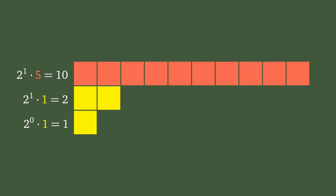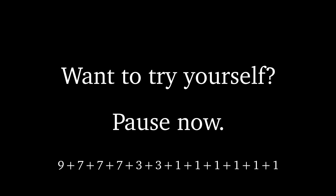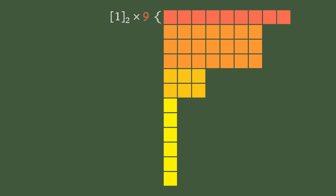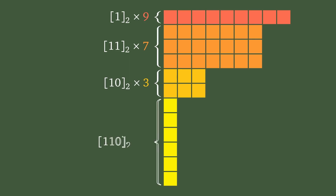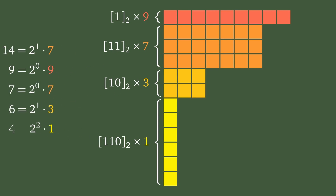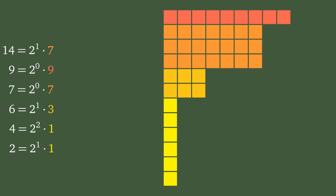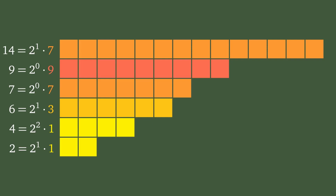While this example might be a bit small, it works just as well for larger partitions. For the partition 9 plus 7 plus 7 plus 7 plus 7 plus 3 plus 3 plus 1 plus 1 plus 1 plus 1 plus 1 of 42, we find — pause the video in case you want to try and figure it out for yourself first. The part counts are: binary 1 times the part 9; binary 1, 1 times the part 7; binary 1, 0 times the part 3; and binary 1, 1, 0 times the part 1. Accordingly, the partition we are looking for has parts 1 times 9, 2 times 7, 1 times 7, 2 times 3, 4 times 1, and 2 times 1. This means that the corresponding partition with unique parts is 14 plus 9 plus 7 plus 6 plus 4 plus 2.